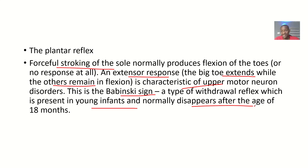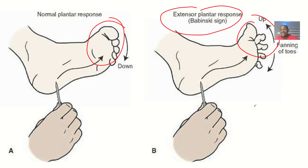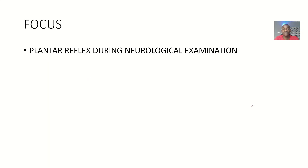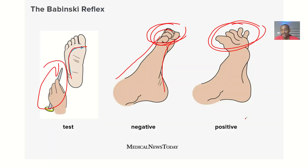The Babinski sign normally disappears after the age of 18 months, so you should not expect it to be negative in little children — it is usually present in them. But if you see extension in an adult, that extensor plantar response tells you there is an upper motor neuron disorder in that patient. That's it for the plantar reflex during neurological examination.